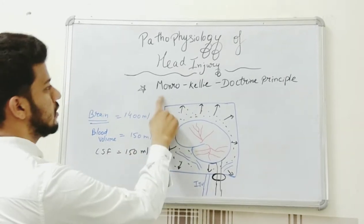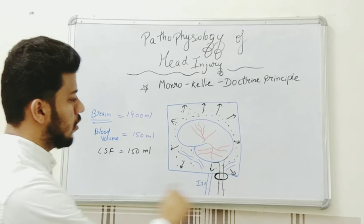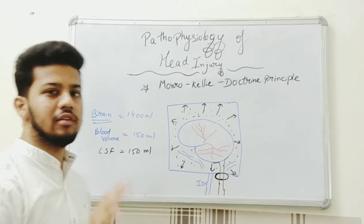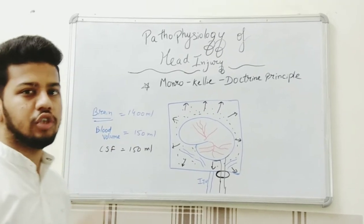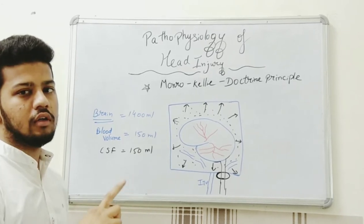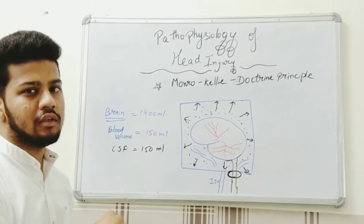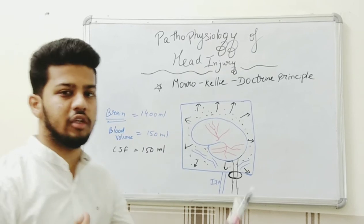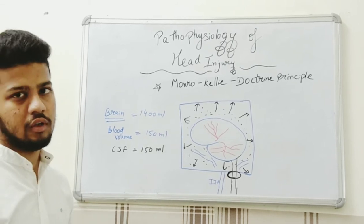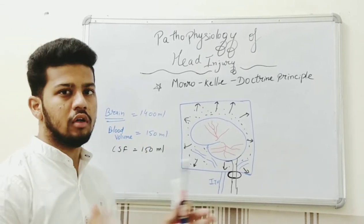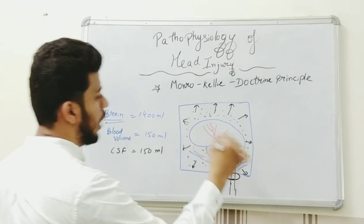This brings us to the Monroe-Kellie Doctrine Principle, which states that the sum of all components inside the cranial cavity is constant. That means the brain volume, blood volume, and CSF volume are constant together. Any change in one of these will require compensatory change in the others to maintain the constant total, because the cranial cavity is a fixed, rigid space.